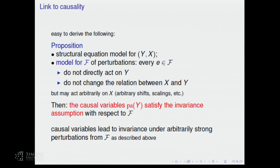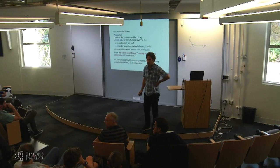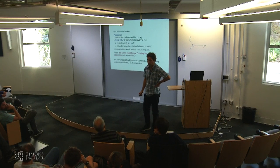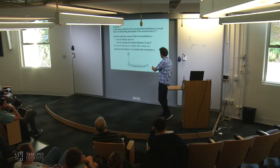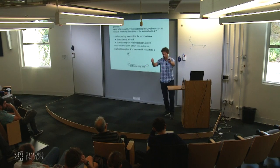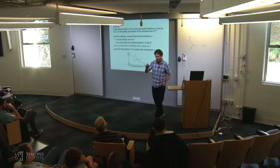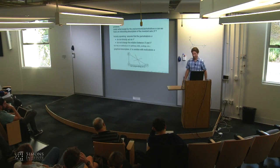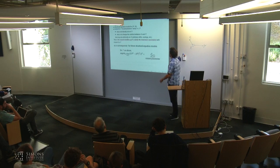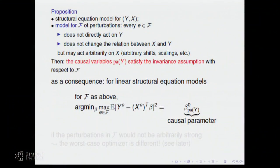An intervention propagates through the structural equation model dynamically. There is dependence on E — but no direct dependence. Pearl's do-operation is a model for a perturbation and it satisfies these assumptions. So if you get invariance, it is an easy step to show that the solution of this worst-case risk optimization problem is the causal parameter, because if you condition on the causal variables you have invariance, which is stable; and the class is sufficiently large that the worst-case risk optimizer is the causal solution.